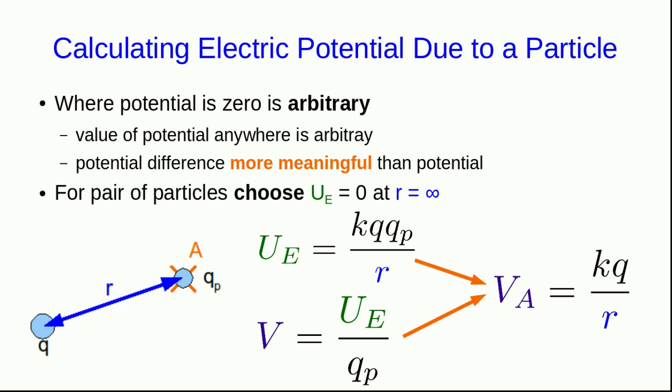And so we get a simple expression for the electric potential at a point A due to a charge q. And note that the probe charge, of course, has dropped out of the expression as it must. This quantity must be independent of the probe charge that we use to measure it.